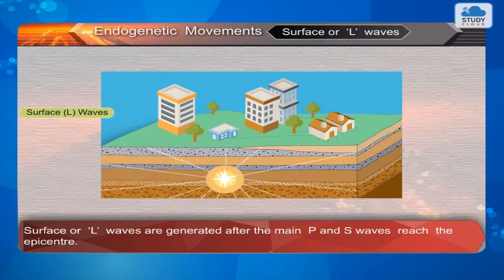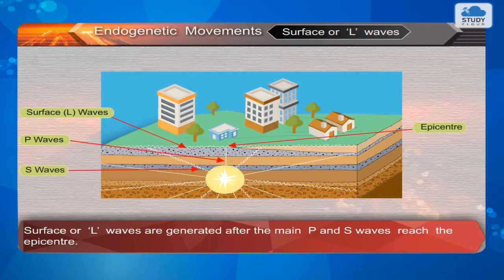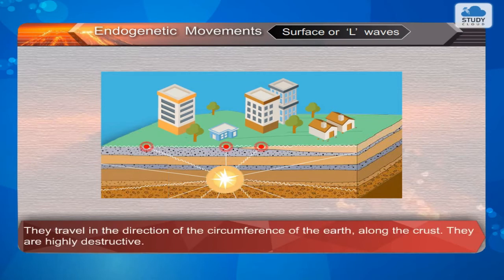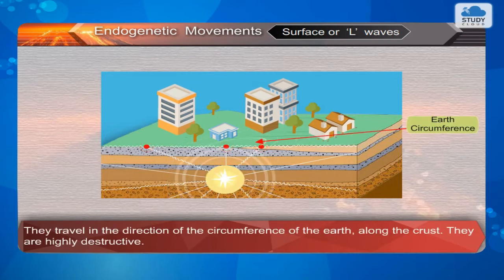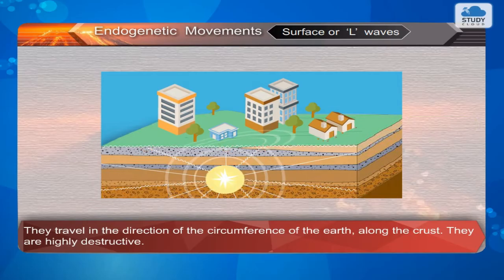Surface or L waves are generated after the main P and S waves reach the epicenter. They travel in the direction of the circumference of the earth along the crust. They are highly destructive.